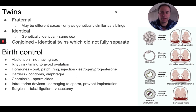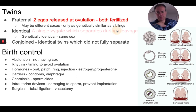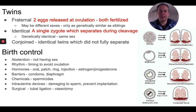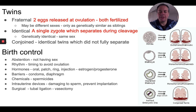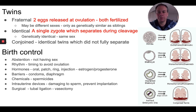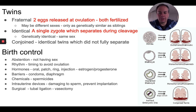Identical twins form differently: a single egg cell is fertilized by a single sperm cell, but early on during embryonic cleavage, that embryo splits for some reason. Those two groups of cells each then grow and develop into their own offspring. But since they came from a single egg and a single sperm cell, they have exactly the same chromosomes — they are genetically identical. Identical twins are always the same sex and look identical.